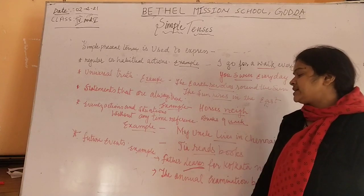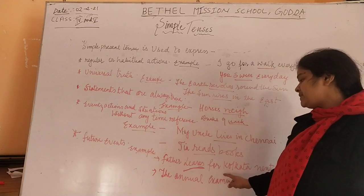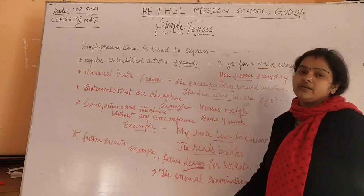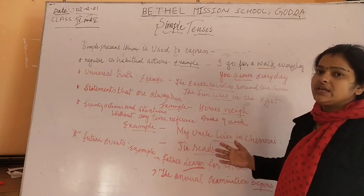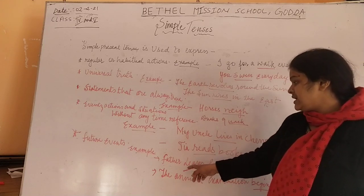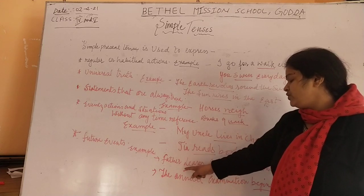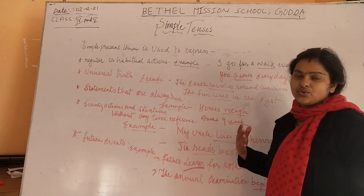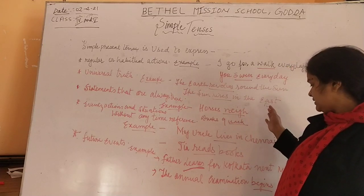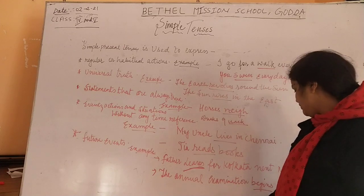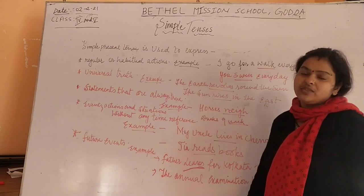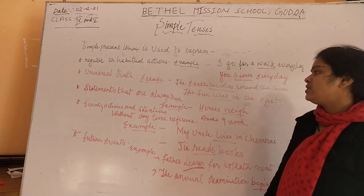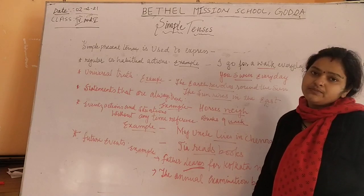Future events can also be expressed in the present tense. For example, father leaves for Kolkata next Monday — when we talk, we often express future events in present tense. The annual examination begins on the 7th of March — 7th March is the date when the annual examination will begin. So future events can also be expressed in terms of simple present tense.